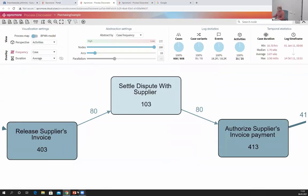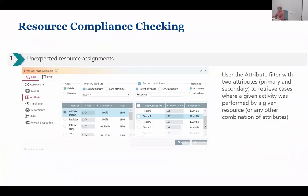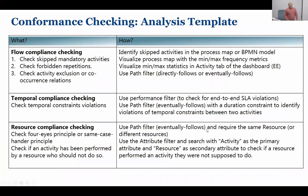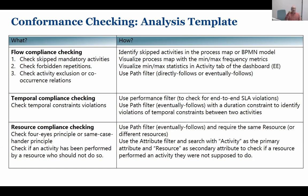You will do a very similar exercise to this one in the practice sessions. To summarize: if you want to check conformance against business rules, capture your rules as flow constraints, SLA or temporal constraints, and resource compliance constraints. Use either the attribute filter or the path filter to filter out cases violating your compliance rules. Once you have them, you are halfway to determining why compliance is being violated.